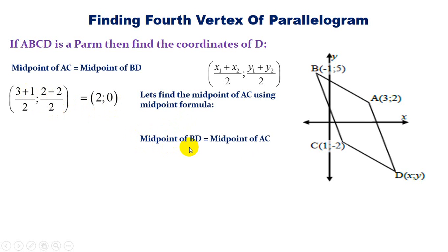Now the midpoint of BD is equal to the midpoint of AC. So let's find the midpoint of BD using the points that we have. We have X minus 1 divided by 2 and Y plus 5 divided by 2 which is equal to the midpoint of AC which is 2, 0.